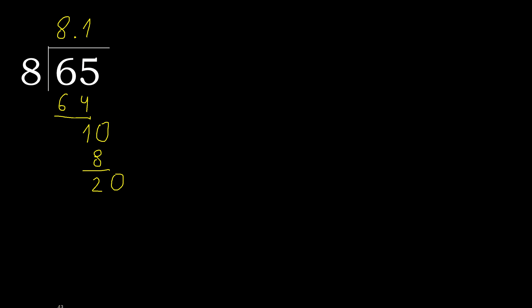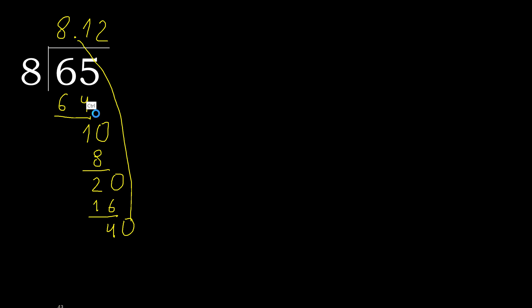20: 8 multiplied by 3 is greater. Multiply by 2: 16. Subtract — remainder is 4. Complete. Complete point. Bring down a 0 — we now have 40.